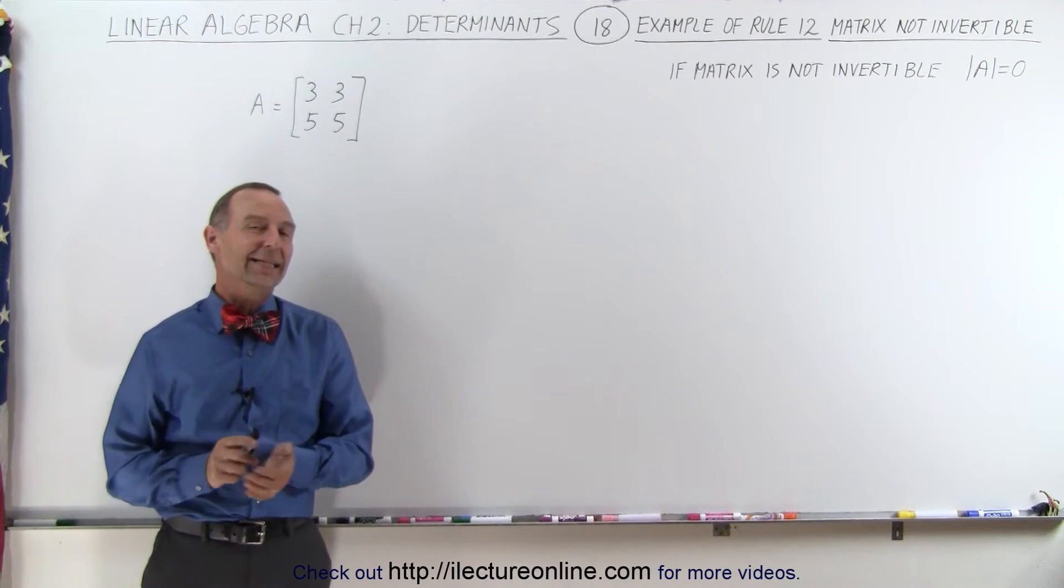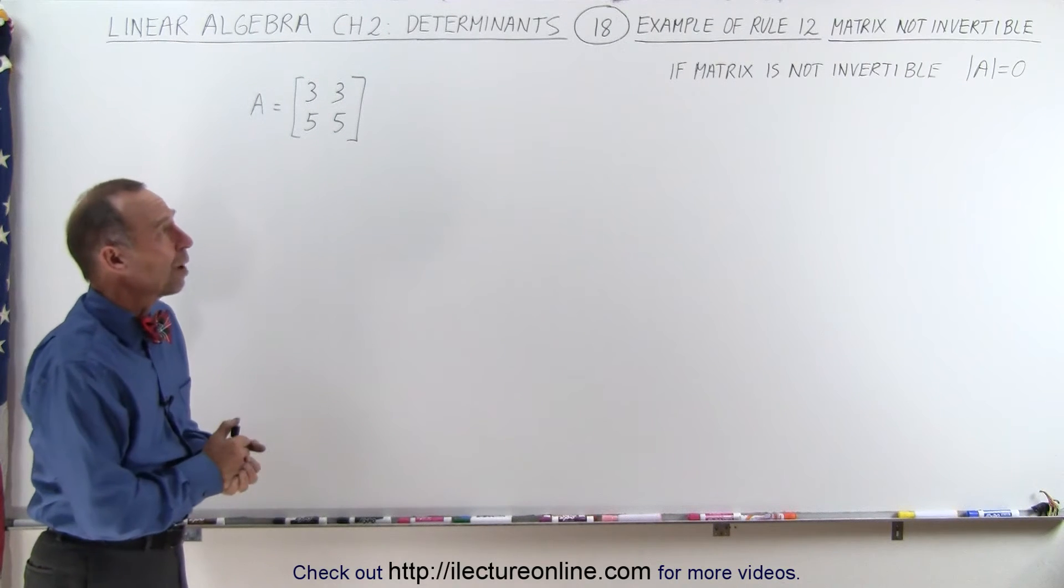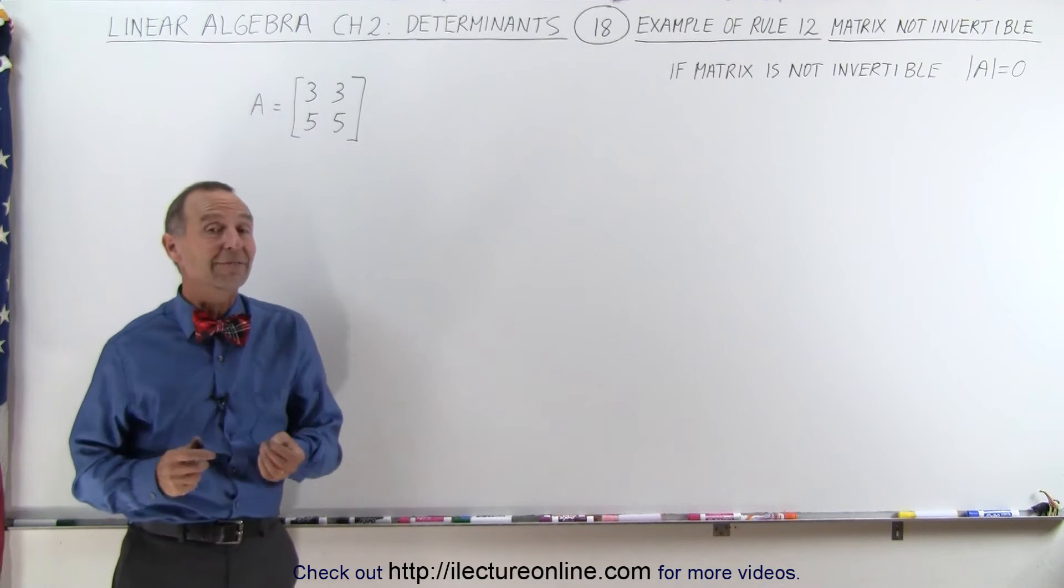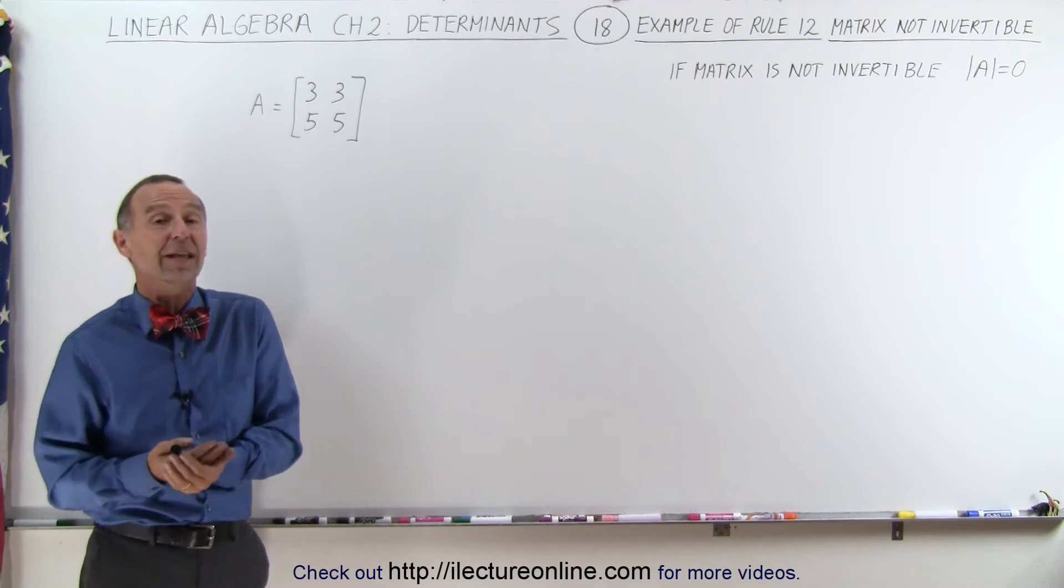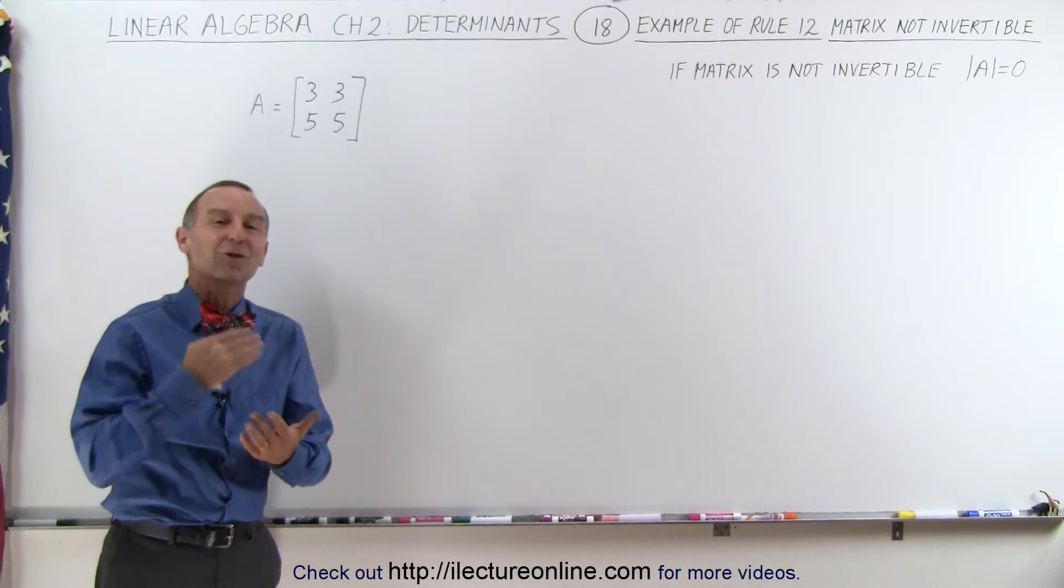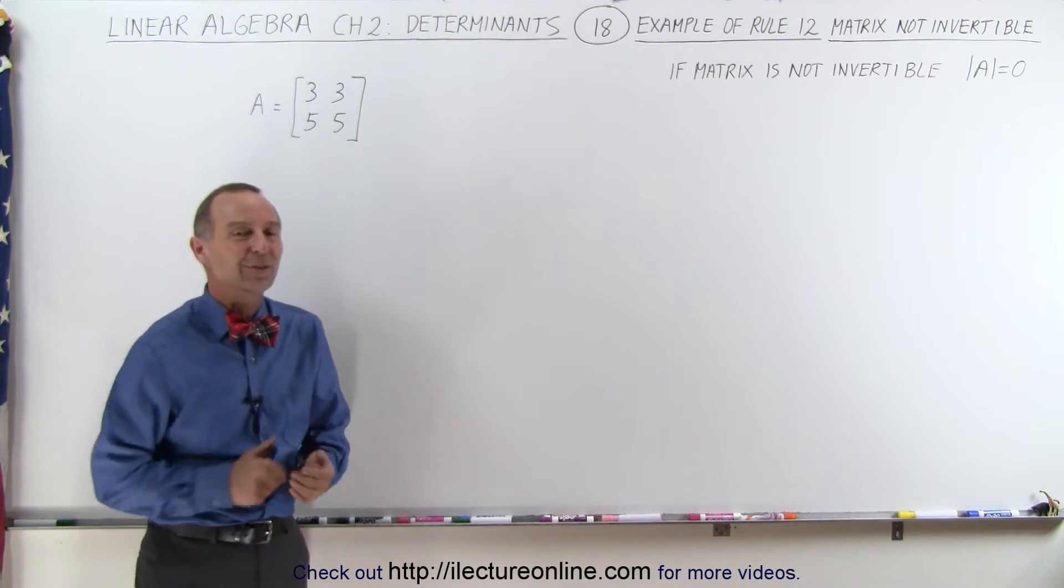Welcome to ElectronLine. Now let's take a look at rule number 12 that tells us that if the matrix does not have an inverse, it's not invertible as we say, then the determinant of the matrix is equal to zero.